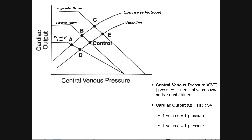This first curve represents a baseline level of activity — basically you sitting at rest. The curve above it represents exercise or positive inotropy. Positive inotropic agents are chemicals or other factors that increase the force of contraction of the heart, increasing stroke volume. If there were a line beneath the baseline curve, as seen in some figures, that would represent negative inotropy or something like congestive heart failure. We don't have that here, so we'll focus on just these two curves.